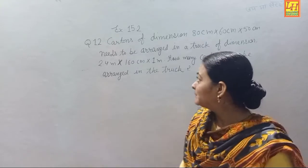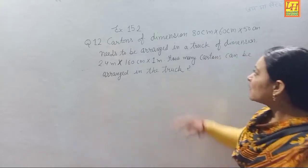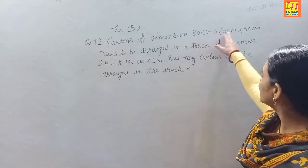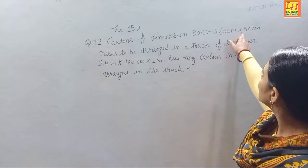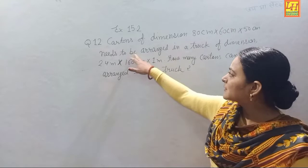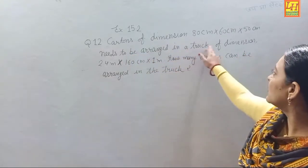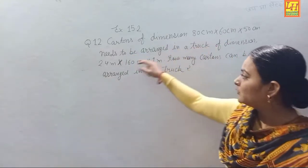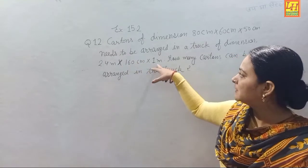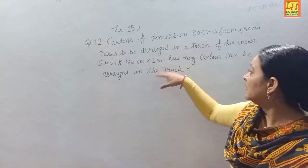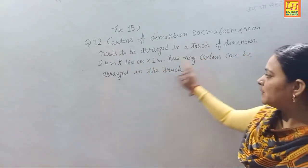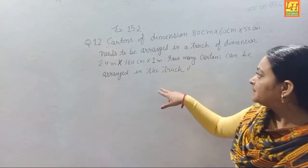Question number 12 is: Cartoons of dimension 80 cm × 60 cm × 50 cm need to be arranged in a truck of dimension 2.4 meter × 160 cm × 1 meter. How many cartoons can be arranged in the truck?